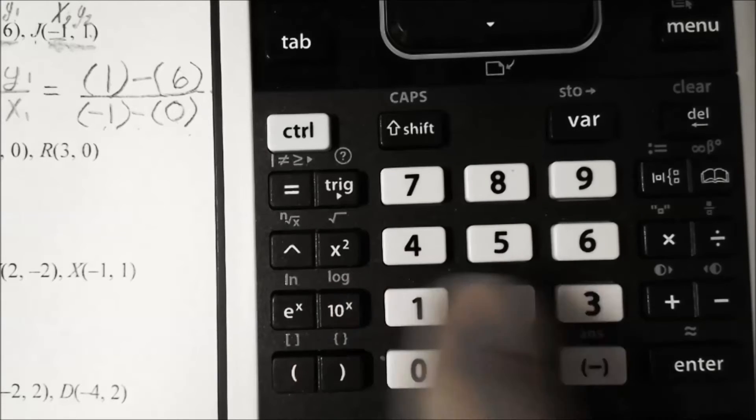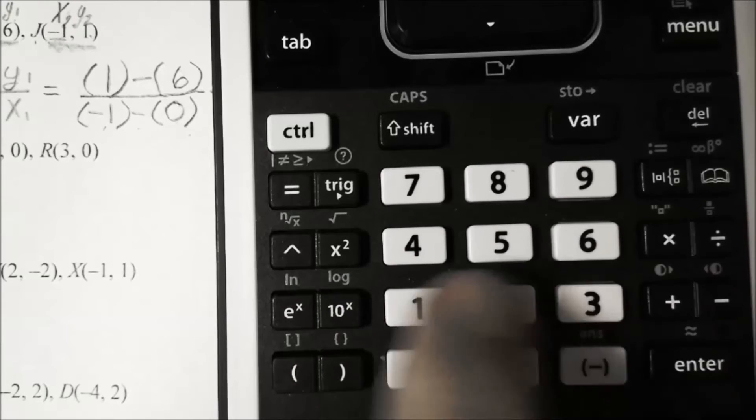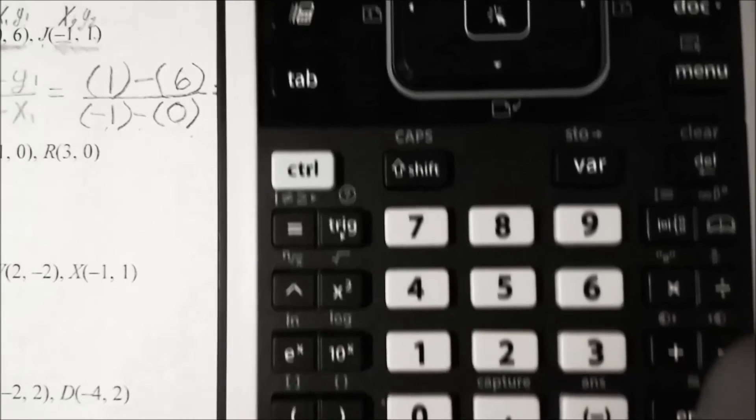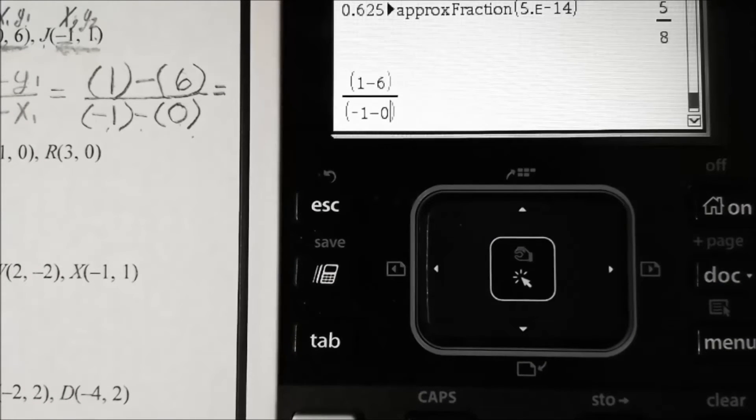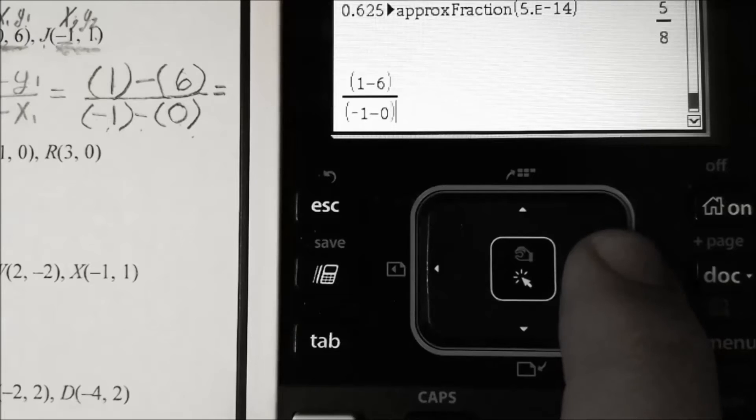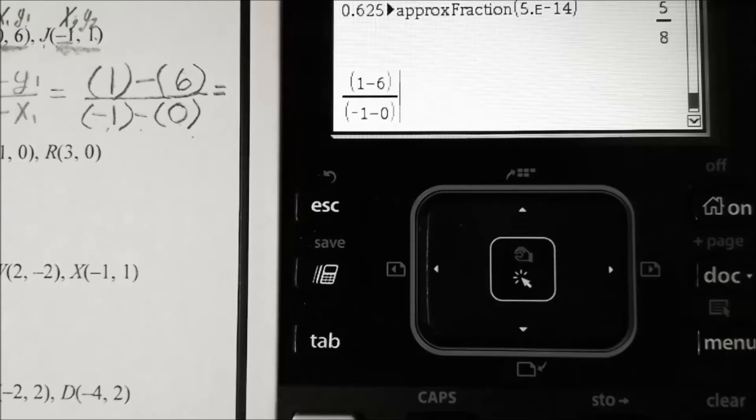I'll bring it back down—you'll see that I have negative one minus zero in there. Now I'm just going to tab over and hit enter, and it tells us that the slope is five, and that is our answer.